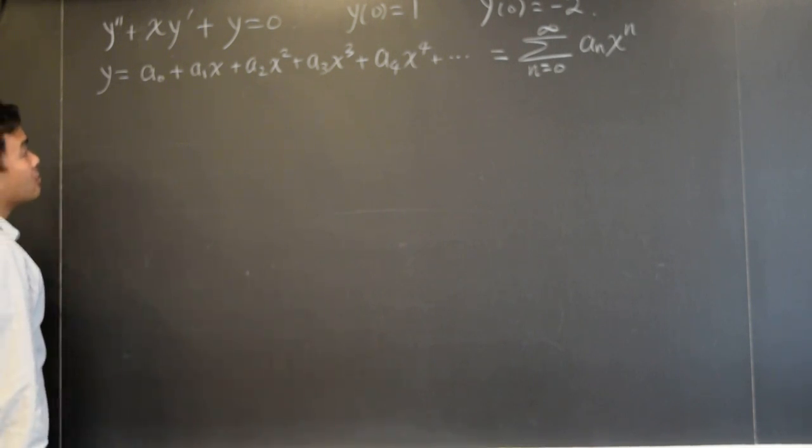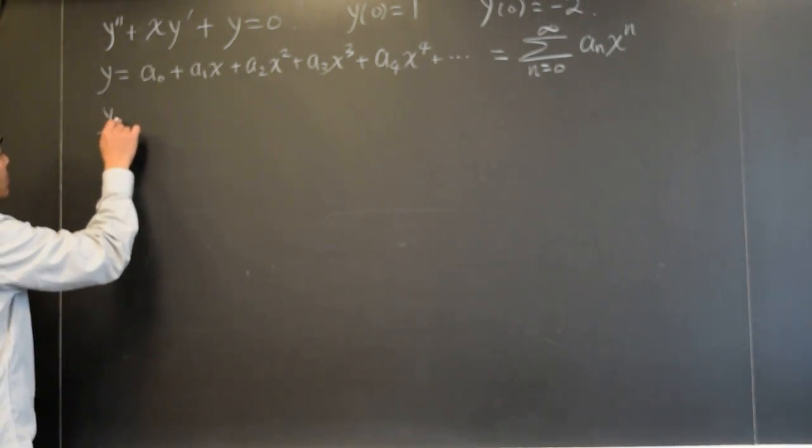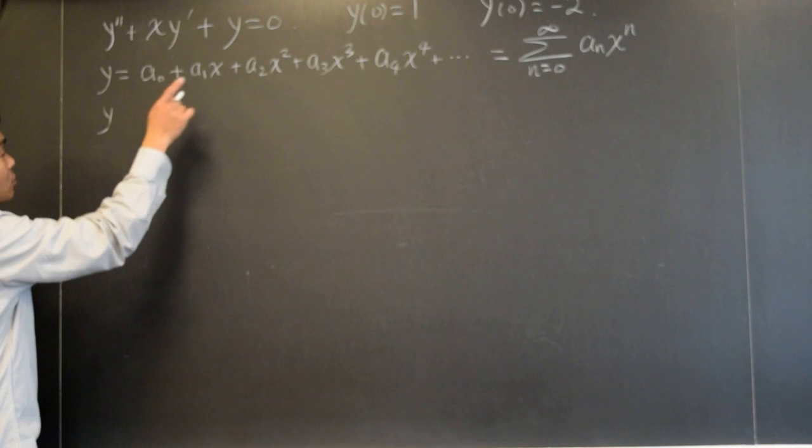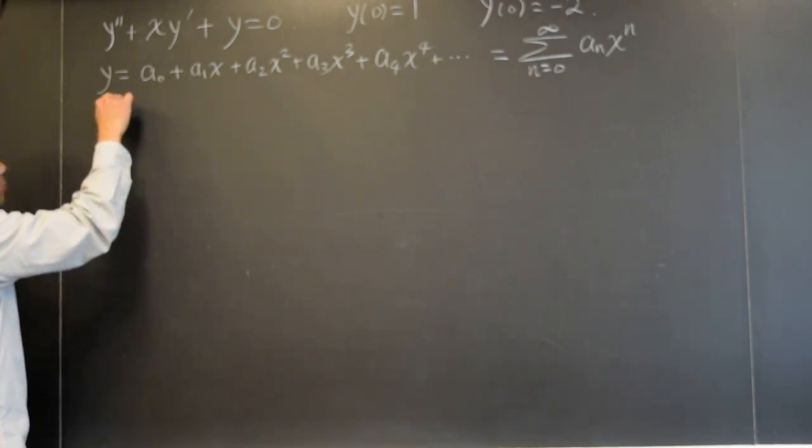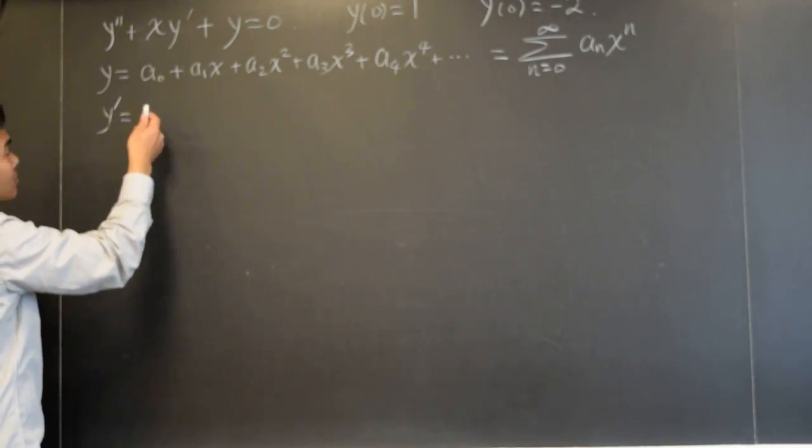And by the way, what is y of zero? One. It's one. Okay. Let's try to differentiate and then we'll discuss that. Okay?